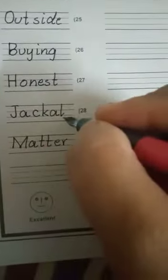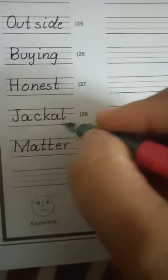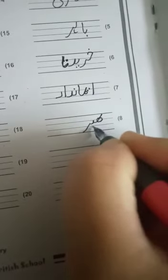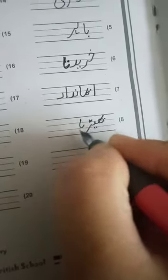Next word is jackal. J-A-C-K-A-L, jackal. Jackal means bhaddia. Be, he, dal, alif, bhaddia.